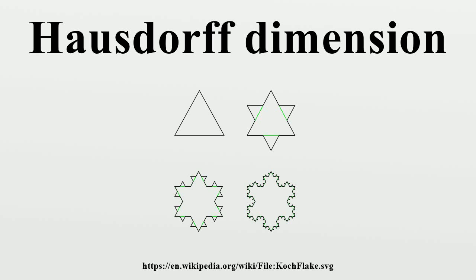Hausdorff dimension is a concept in mathematics introduced in 1918 by mathematician Felix Hausdorff, and it serves as a measure of the local size of a set of numbers, taking into account the distance between each of its members.